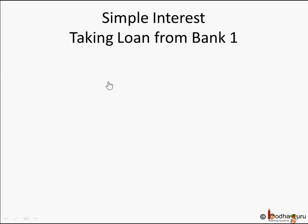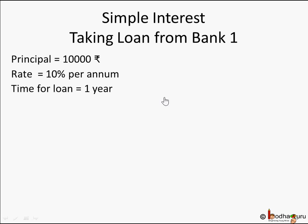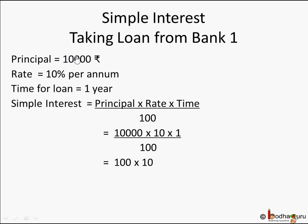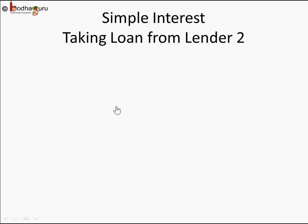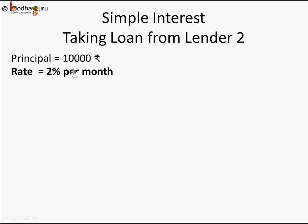Let's find out. From Bank 1 we already calculated: 10,000 at 10% per annum for 1 year gives simple interest = 10,000 × 10 × 1 ÷ 100 = 1,000 rupees. Amount to repay is 11,000 rupees. But that lender was giving a very attractive option - 2% - except he said per month, not per annum. You didn't pay attention to 'per month.' The rate of interest is 2% per month, not per annum.